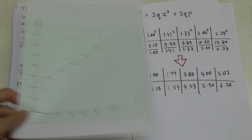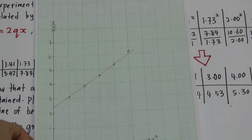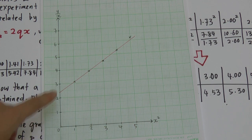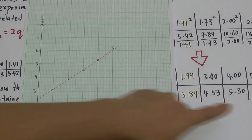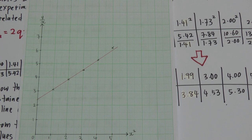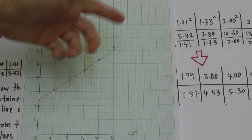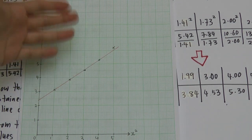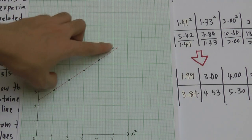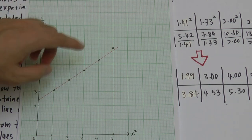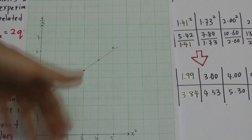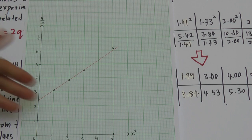You have to understand what best fit means. Best fit means your line passes through as many points as possible, and the points you miss on the left-hand side and right-hand side must be balanced. Here you can see my left-hand side misses out one point and my right-hand side also misses one point — so that's balanced. This is called best fit.